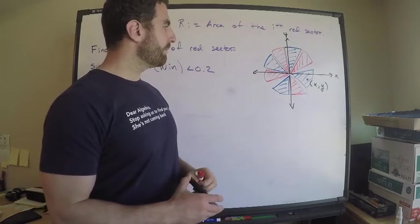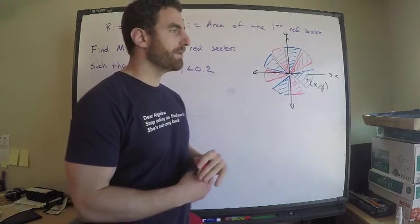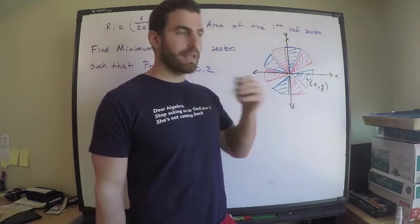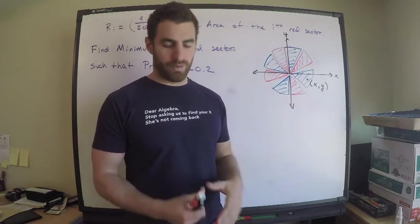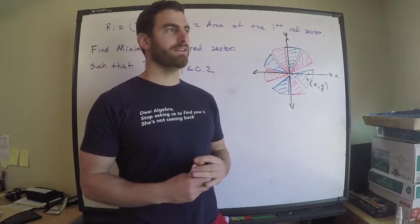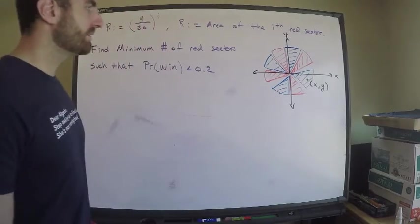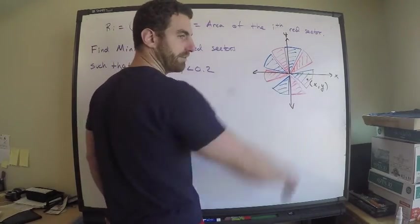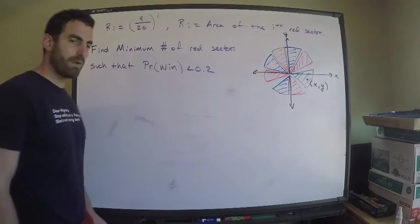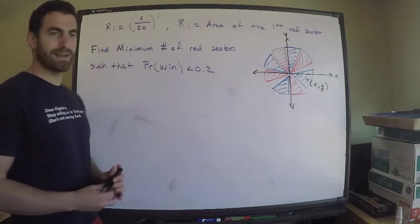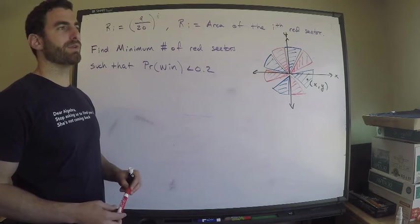We're told that someone blindly picks a point in the xy plane that will determine whether they land in blue or red. If they land in blue they win, if they land in red they lose. We're asked: what is the minimum number of red sectors such that the probability I win is less than 0.2, less than 20 percent?